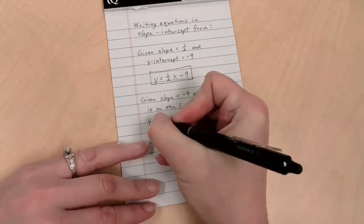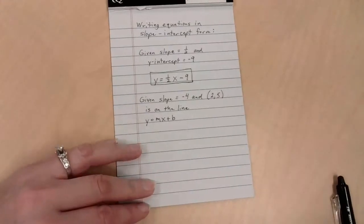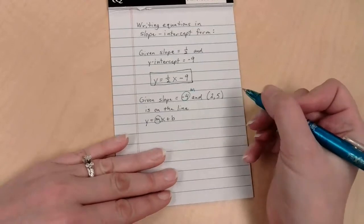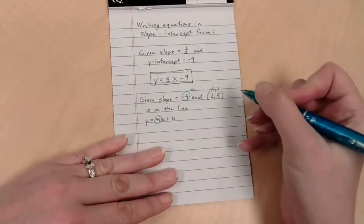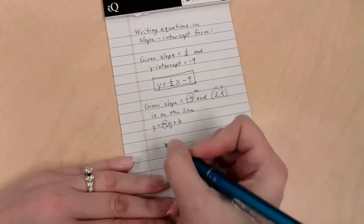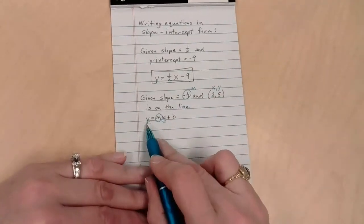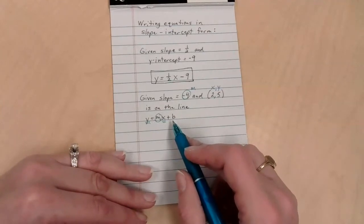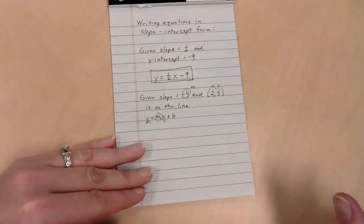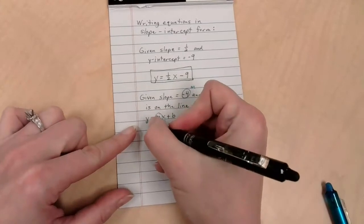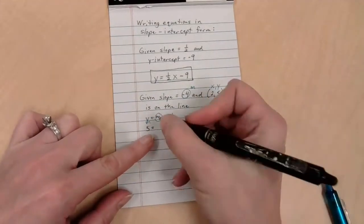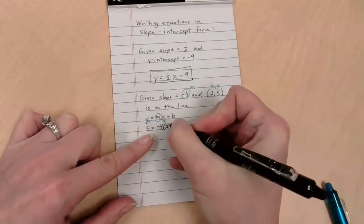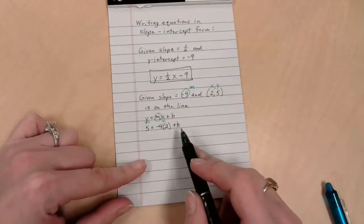Slope-intercept form is y equals mx plus b. What have we been given? This is m. This is an ordered pair, x and y. So I have a number that could go with the y, a number with the m, and a number with the x. I have everything but the b, which means I could solve for b. What is y? y is 5. What is m? Negative 4. What is x? x is 2. So negative 4 times 2 and then plus b.